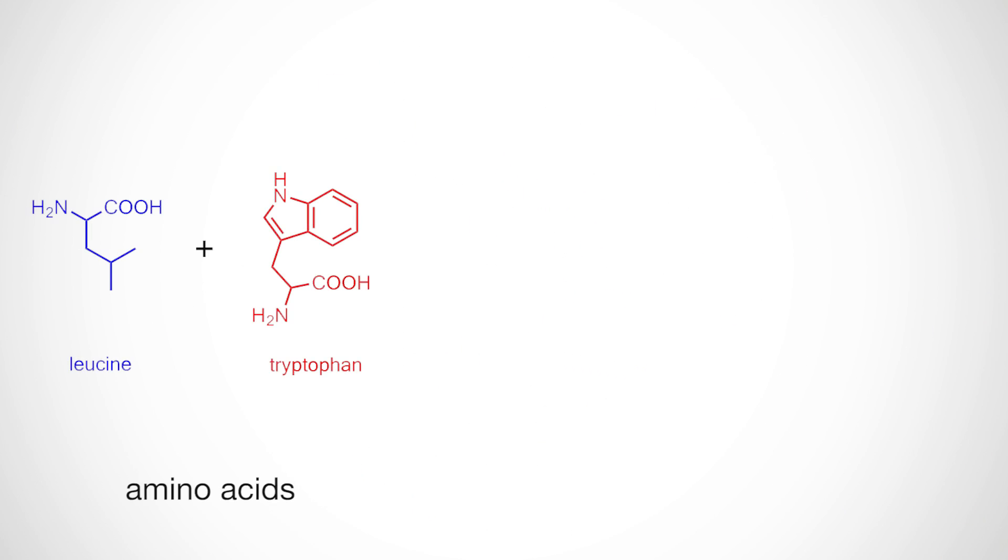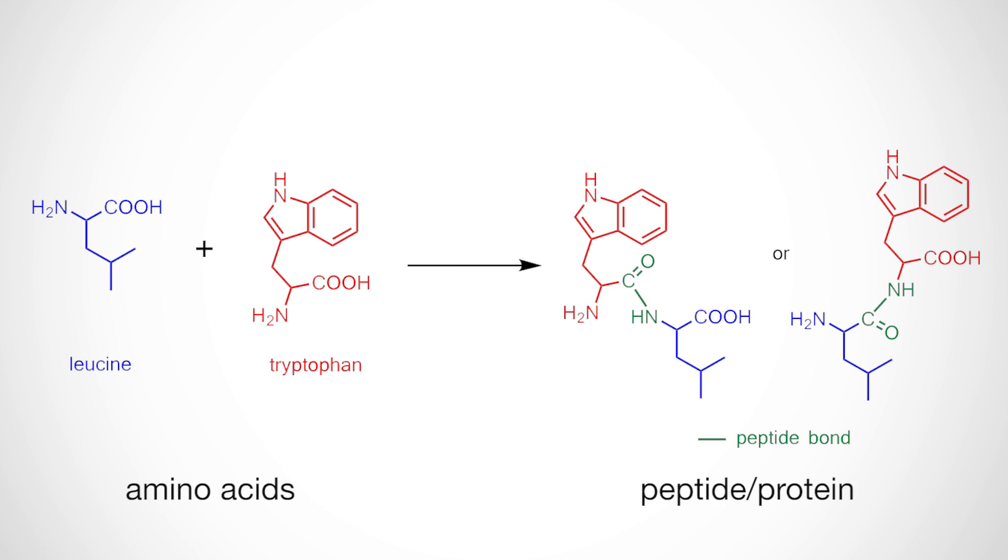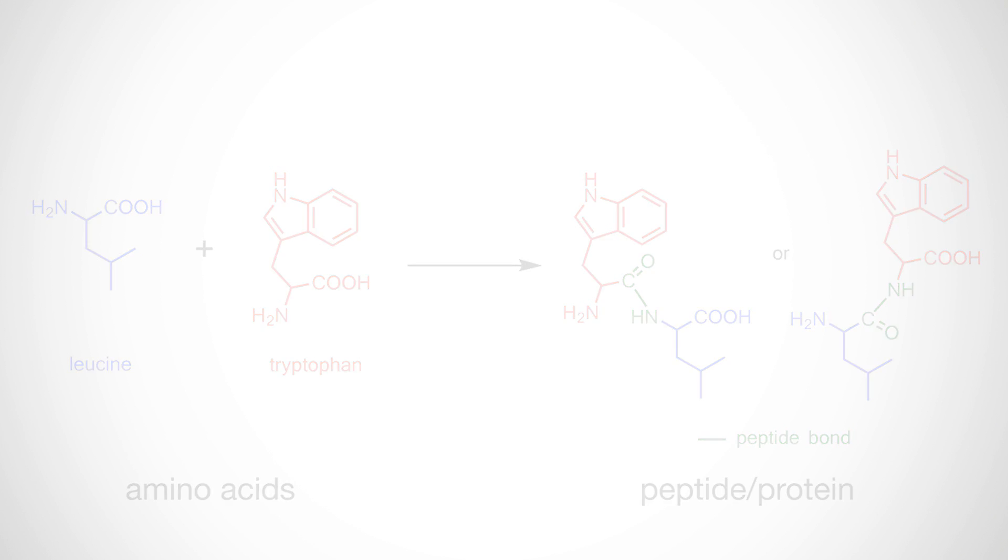In proteins, amino acids come together to form a peptide bond. The human body is responsible for the production of many proteins, including insulin.